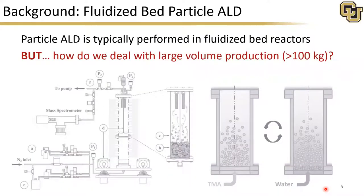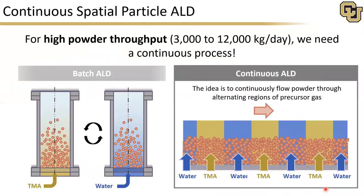The challenge is how do we deal with large volume production? This is typically done by increasing your system size, which results in higher costs and higher system footprint. You can also use deeper beds, but this comes with its own set of fluidization challenges, especially when working with very difficult to fluidize powders. So for high powder throughput — meaning 3,000 to 12,000 kilograms per day — we really need a continuous process, and this is where continuous spatial particle ALD comes into play.